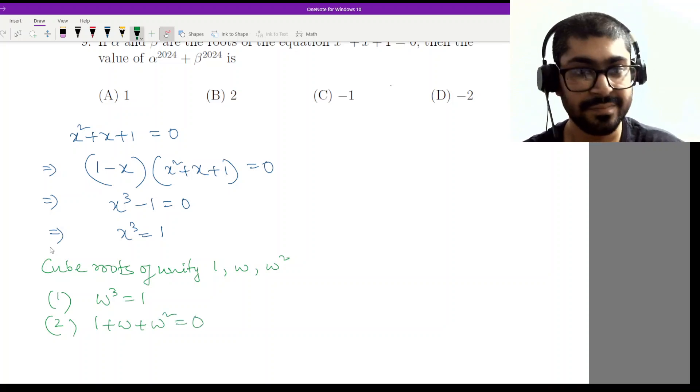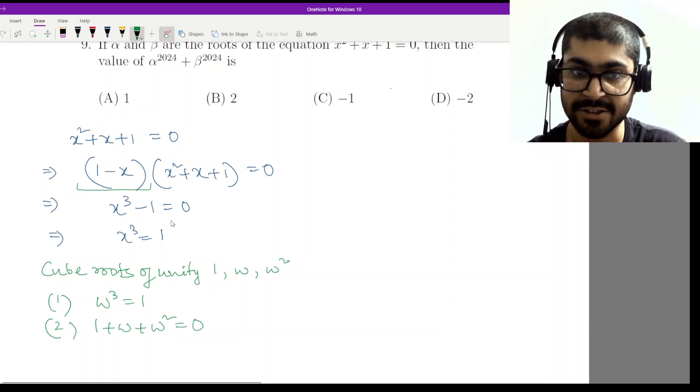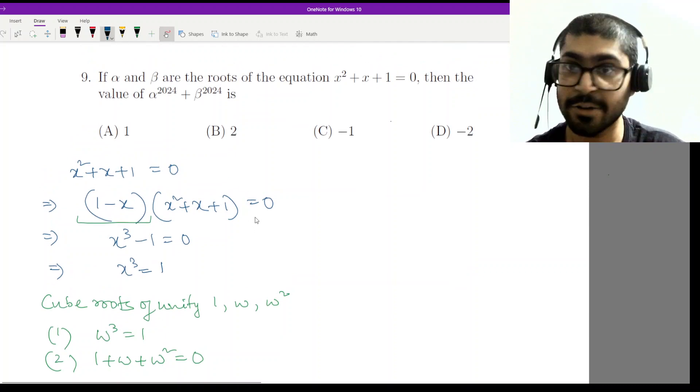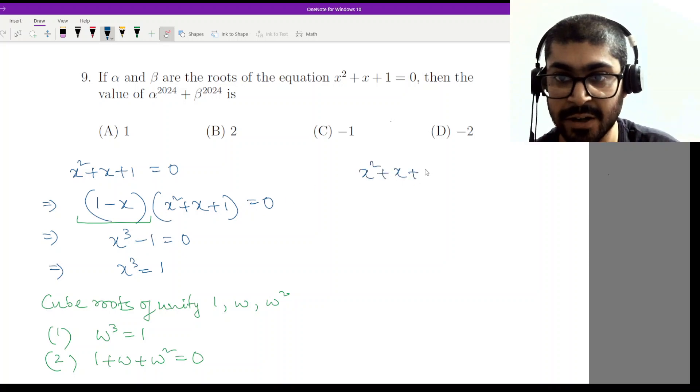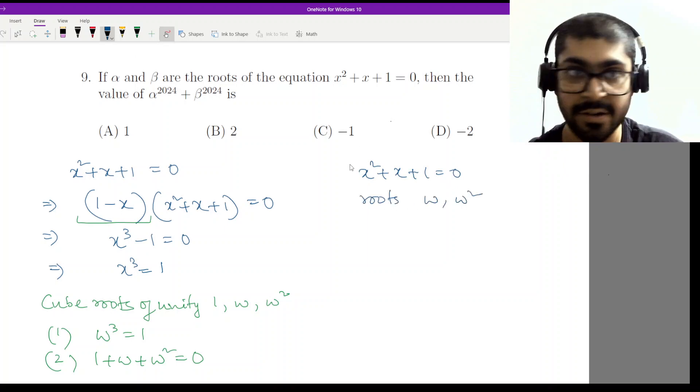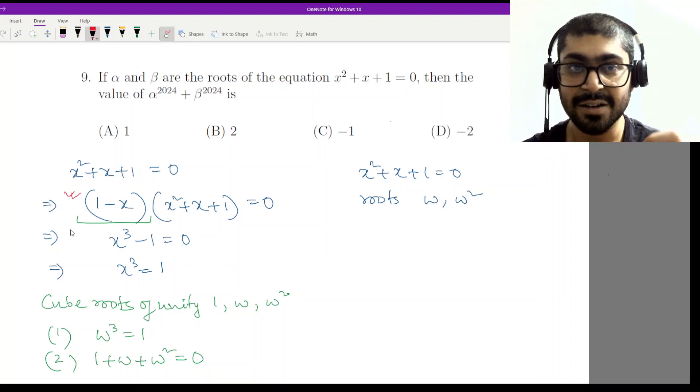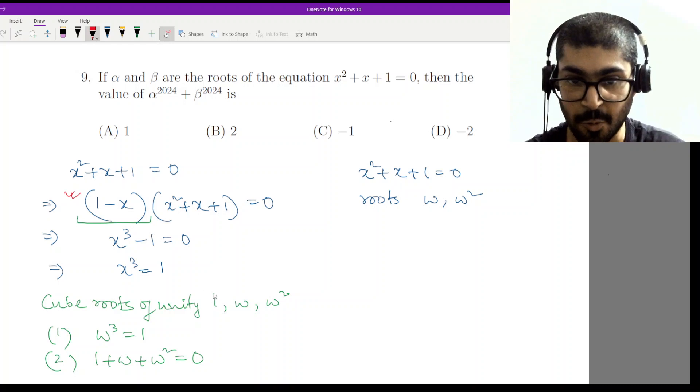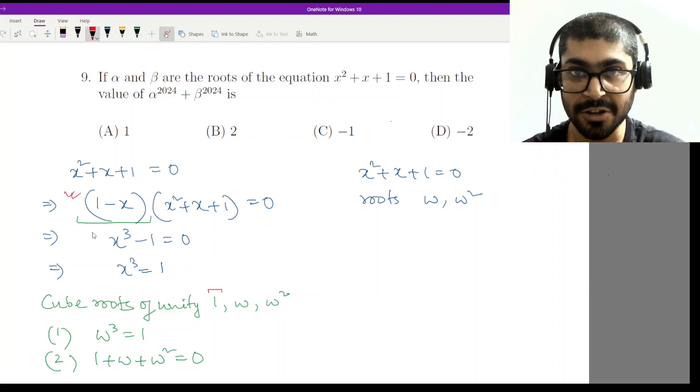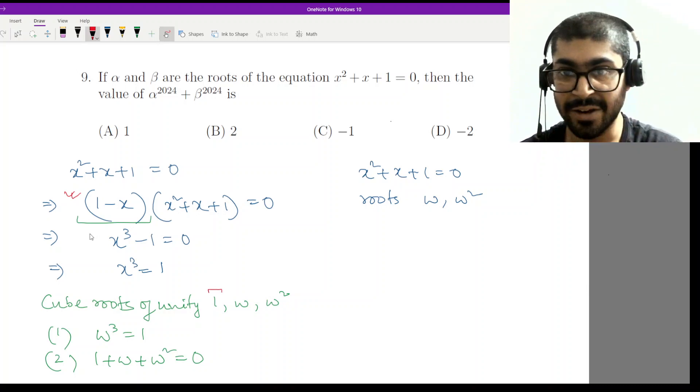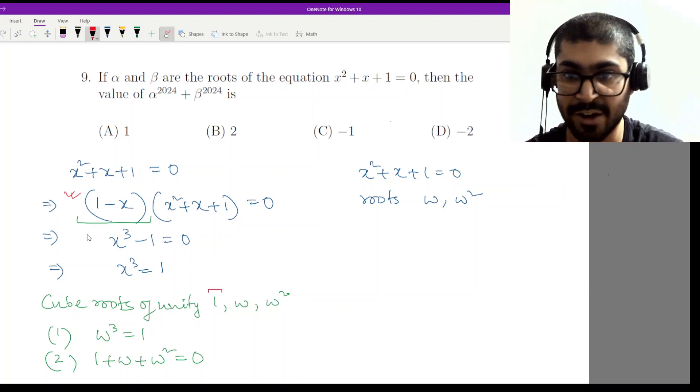Alright, now what is the multiplication factor that we introduced? We introduced 1 minus x. So that value corresponds to x equal to 1 because we introduced 1 minus x. So what will be the roots of x squared plus x plus 1? This equation will have roots omega and omega square. I hope you understood this point because we introduced this term 1 minus x. The solution of 1 minus x is x equal to 1. So that was the part where 1 came from. Now for the other two roots of unity, which are omega and omega square, they will be the solutions of the other part. So omega and omega square.